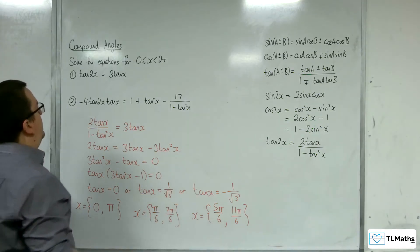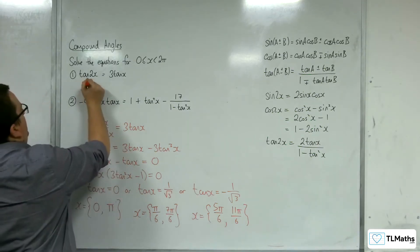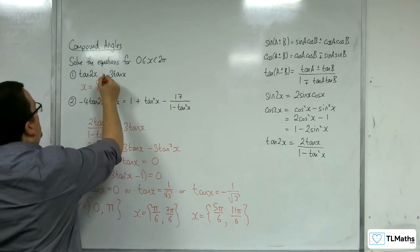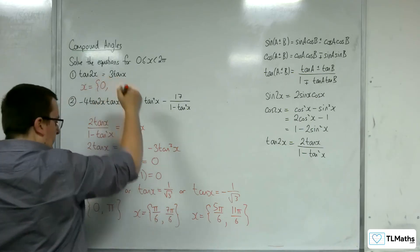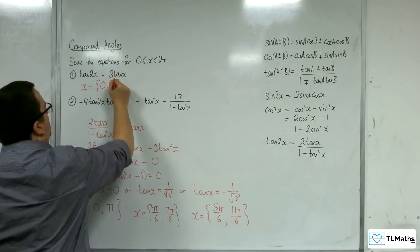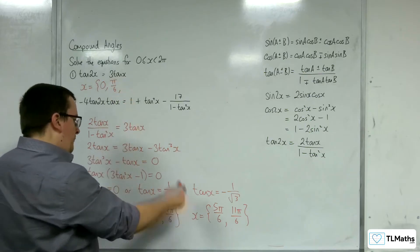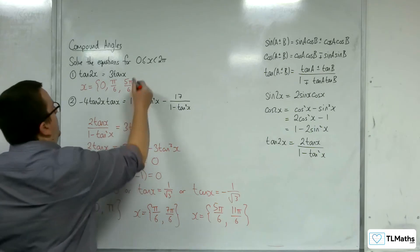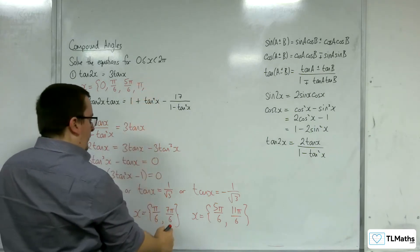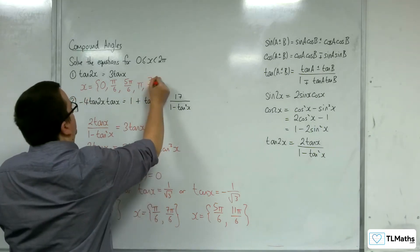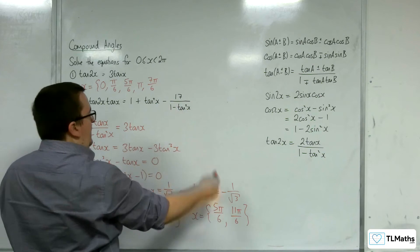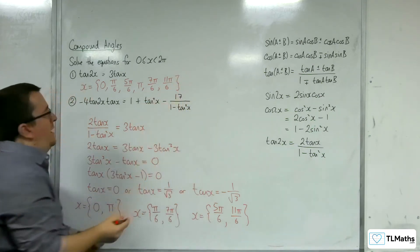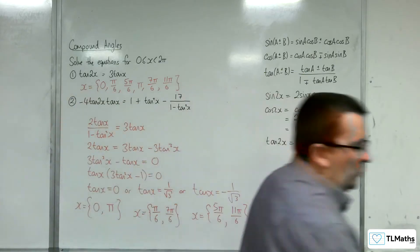So we've actually got 6 solutions. So x is equal to, in order of size: 0, then pi over 6, then 5 pi over 6, then pi, then 7 pi over 6, and then 11 pi over 6. And those are the 6 solutions that solve this equation.